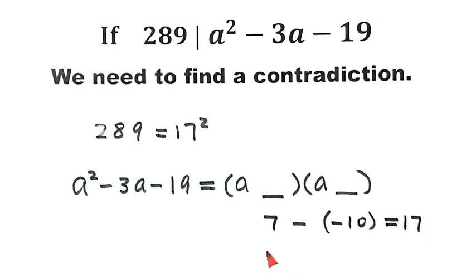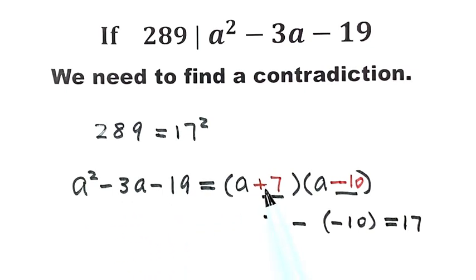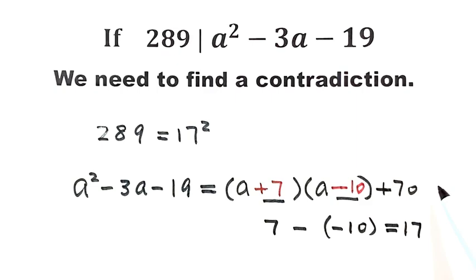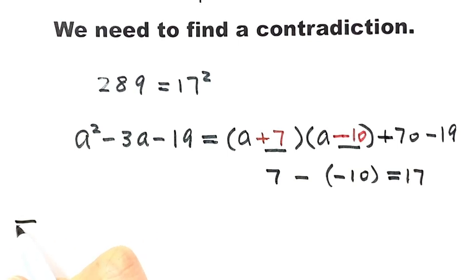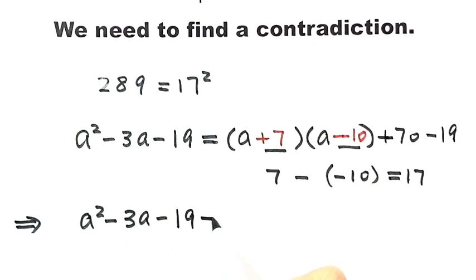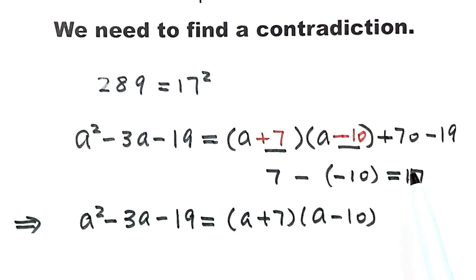Now let's put these numbers in. We have (a + 7)(a - 10). Expanding, this gives a squared minus 3a, but also 7 times negative 10 equals negative 70, so we need to add 70 outside, giving plus 51. Therefore, a squared minus 3a minus 19 equals (a + 7)(a - 10) plus 51.